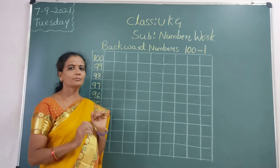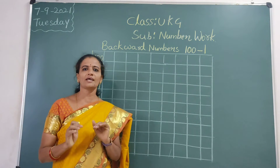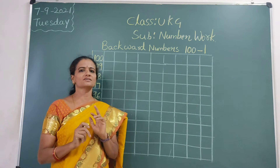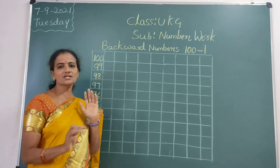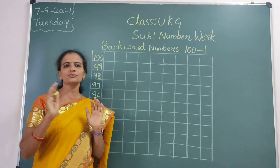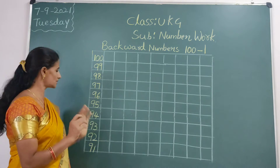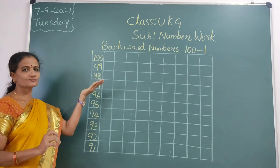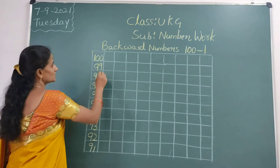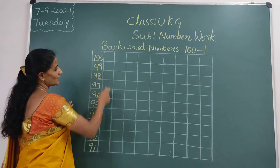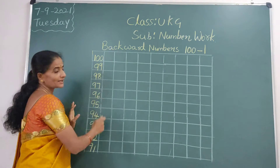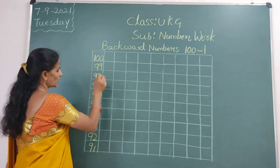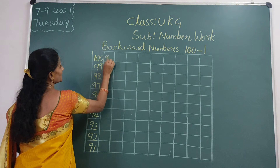Already we learnt these, but today we are learning reverse — reverse numbers 100 to 1. So after 91, leave a line children. You leave a line and write in the next line. 90.